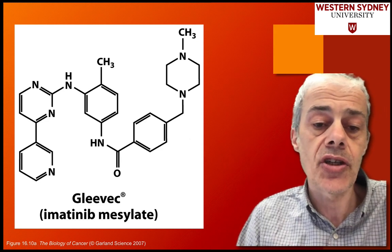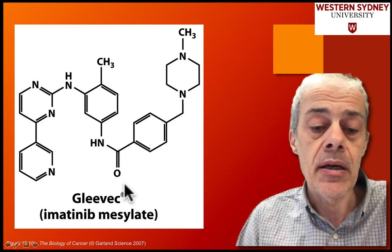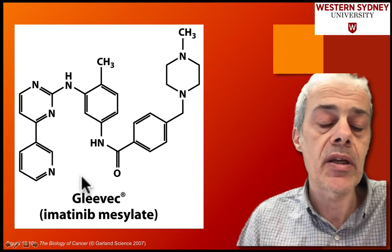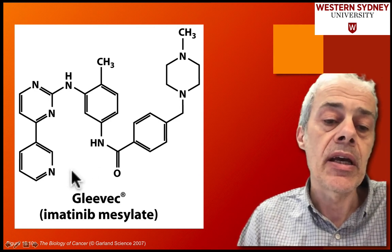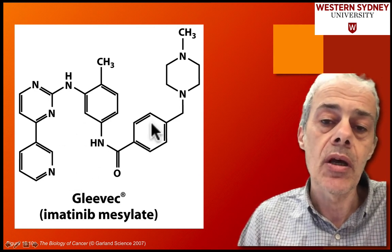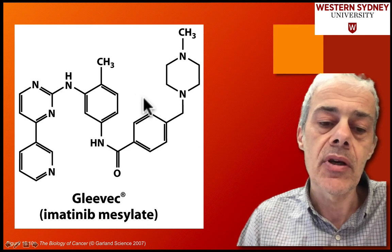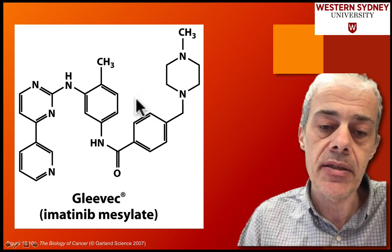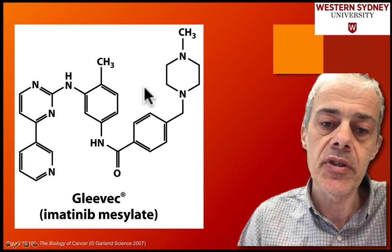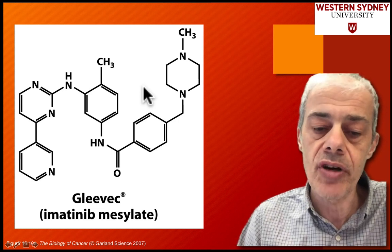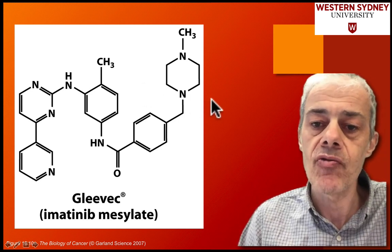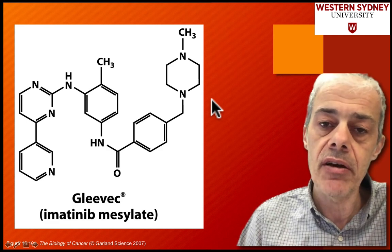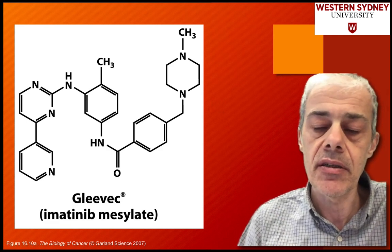Gleevec is an example — a relatively small, low molecular weight compound that has been highly effective at treating some cancers. It was designed through a rational drug design program rather than a serendipitous discovery such as cisplatin.